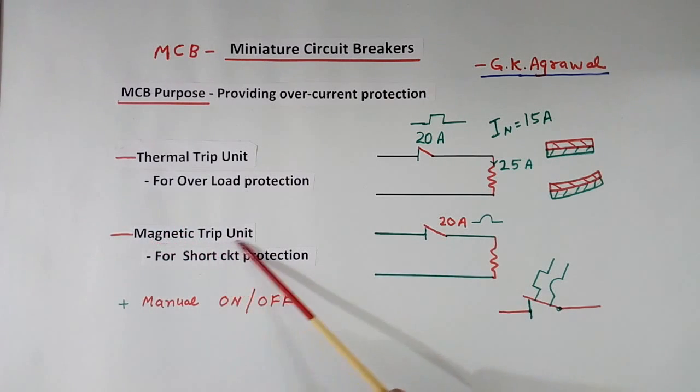And this magnetic trip unit will have a coil, a magnetic coil. Because of that, it will trip. That will be very fast, generally will operate in a few milliseconds.